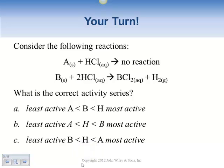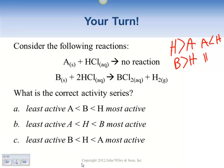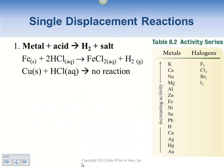If A will not replace H but B will replace H, then how do we organize these in the activity series? We know H is greater than A, and B is greater than H. Rewriting as less thans: A is less than H, and H is less than B — so we write A < H < B.